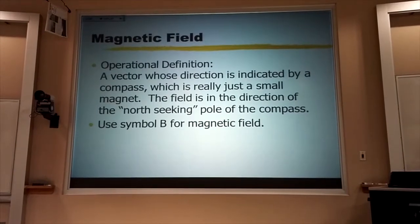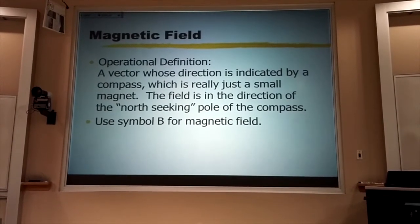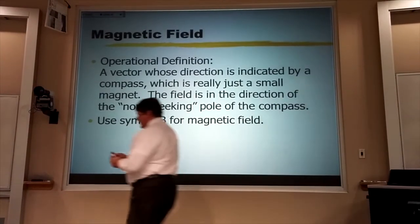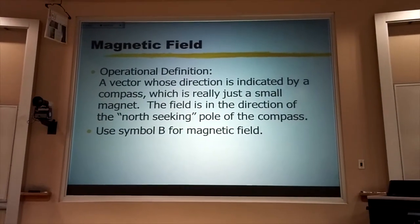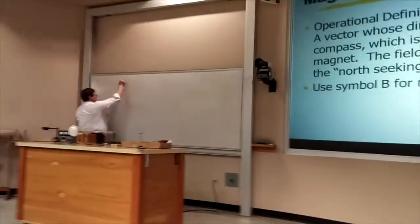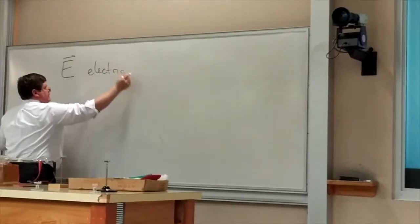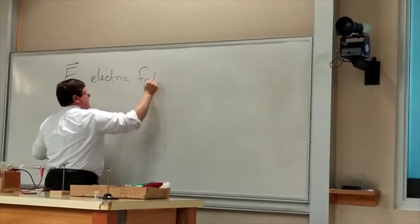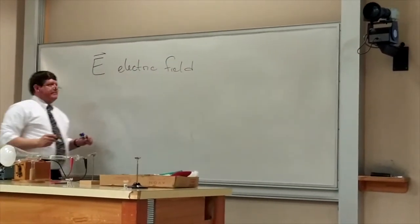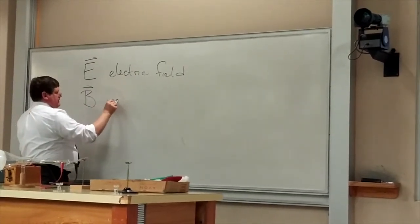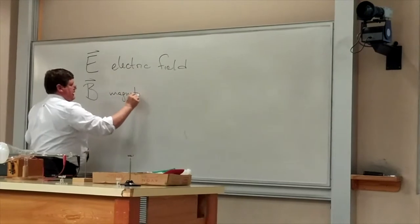Now, we use the symbol B for the magnetic field, and this seems out of character. You remember we used the symbol E, capital E, for an electric field. And that made sense, but B for the magnetic field does not.